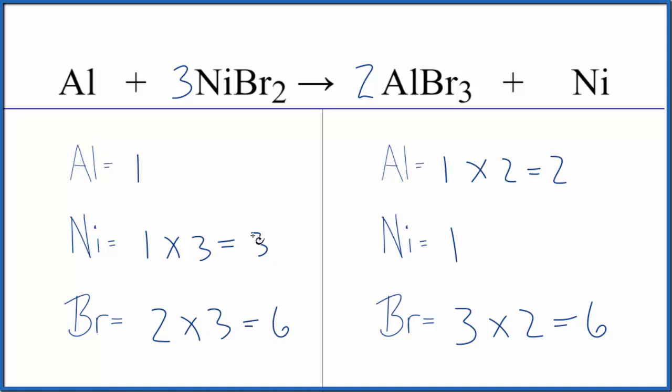I have three nickels on the reactant side, one on the product. I'll put a three here as my coefficient, one times three. Those are balanced. For the aluminum, I need two. Coefficient of two, one times two, that equals two.